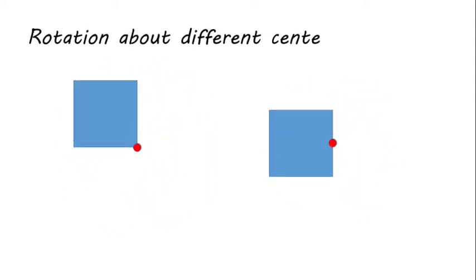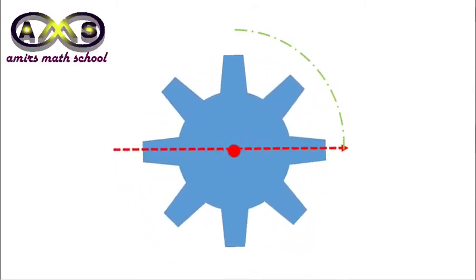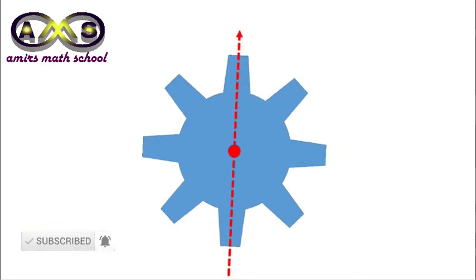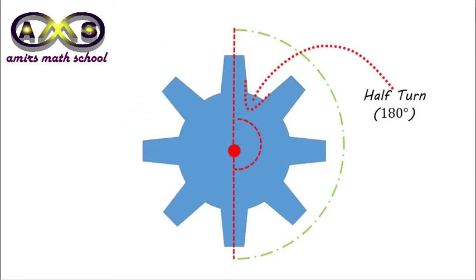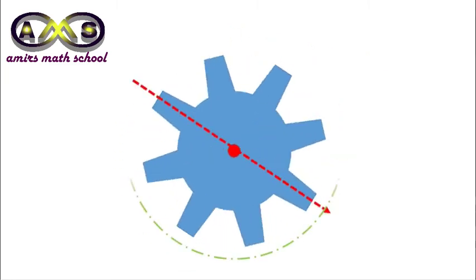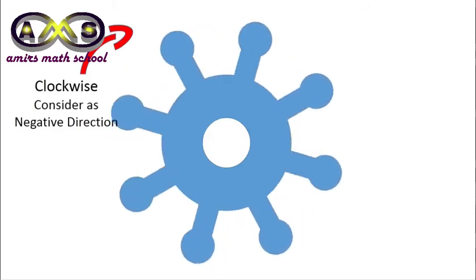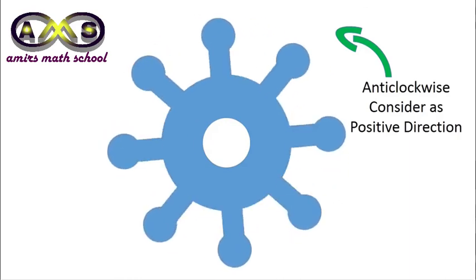Let's see rotation about different centers of rotation. Some information about rotational symmetry: a quarter turn is 90 degrees, a half turn is 180 degrees, and a full turn is 360 degrees. Clockwise rotation is considered as negative and anticlockwise is considered as positive.